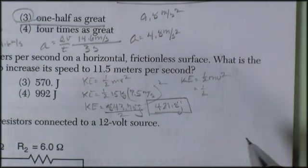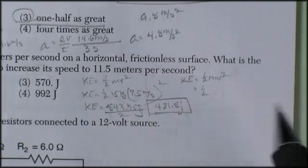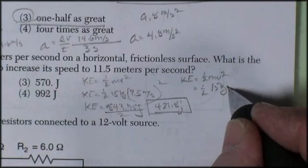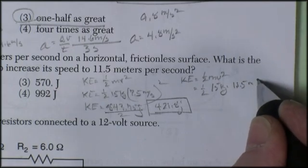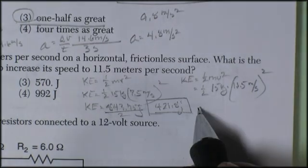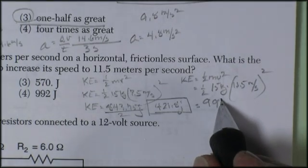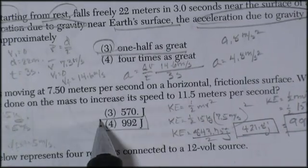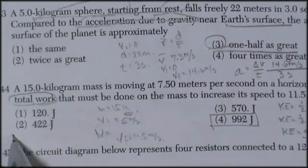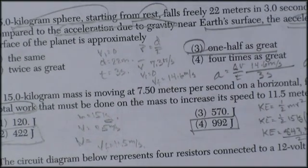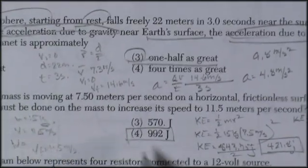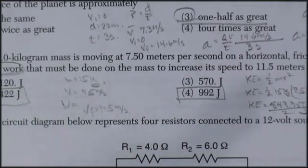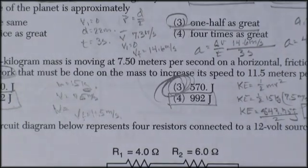So now I do the kinetic energy and you can see why it's so important to write the equation. Otherwise you make stupid mistakes. Kinetic energy of fifteen kilograms times 11.5 meters per second squared. And that gives me a kinetic energy of 991.8 joules. Now you'll notice 990 something is one of the answers. It's not the correct answer. 422 is one of the answers. Not the correct answer. It asks what work must be done to bring it from 7.5 to 11.5 meters per second. So it's the difference between those two. And I'm going to go ahead and guess and say that it's 570.